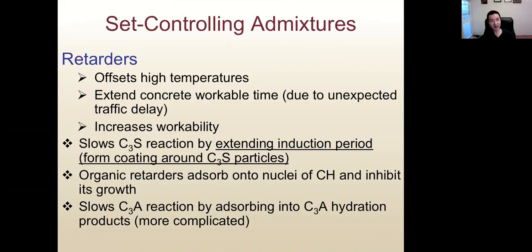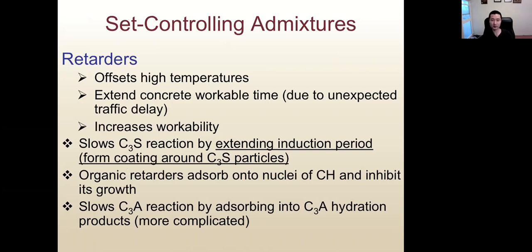Retarder is the opposite of accelerator — it will increase setting time. If we do not want high temperature in concrete, for example in mass pouring, we may use a retarder to offset the high temperature. We can also extend the workable time of concrete by increasing the setting time — for example, if we have a traffic delay, we may introduce retarder so the concrete sets later. Most retarders are organic materials with a long chain molecule. This molecule will wrap around the C2S particles, making the hydration product harder to form around C2S, thus increasing the setting time.